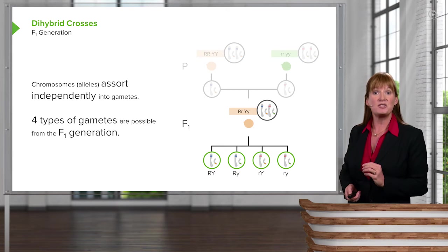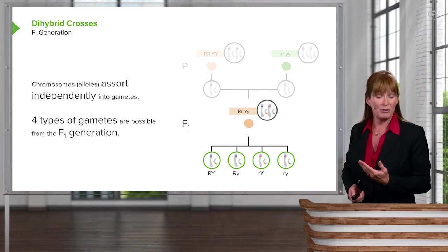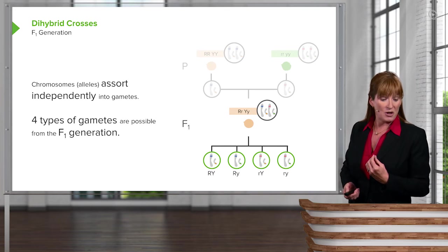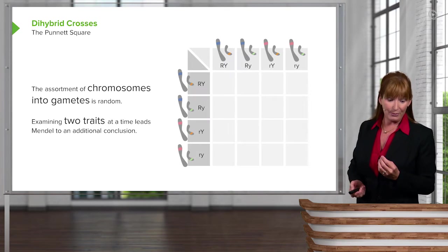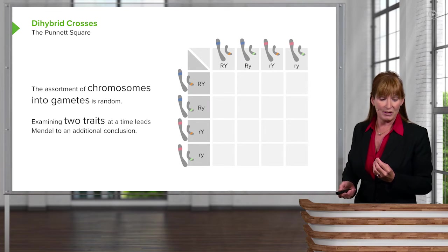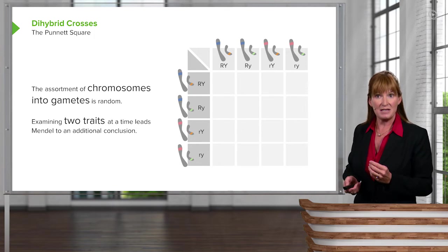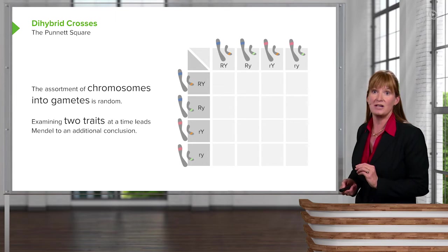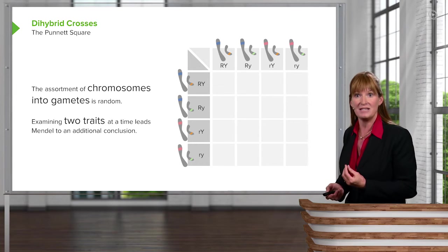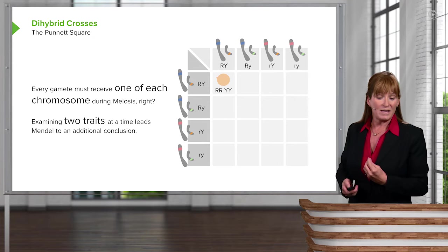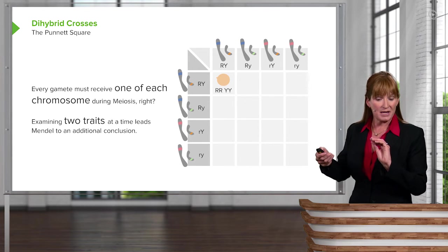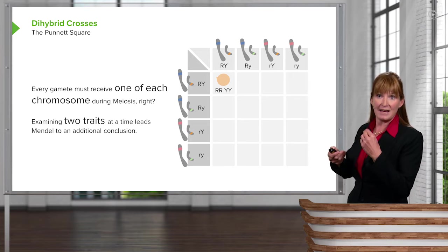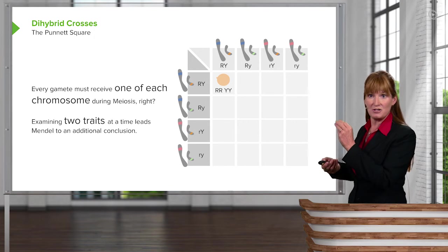In order to figure out the F2, we have to do a larger Punnett square. So let's take a look at how that works out. We have individual assortment of our chromosomes into gametes, then the progeny that we should expect to get, which are the ratios that Mendel indeed found, would give us the big R and big Y, brought together with a big R and a big Y, can only give us two big Rs and two big Ys.